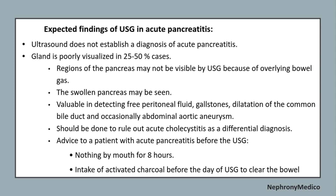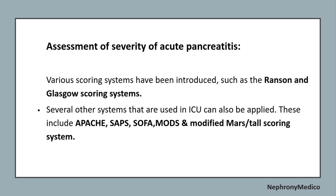Expected findings on ultrasound in acute pancreatitis: ultrasound is valuable in detecting free peritoneal fluid, gallstones, dilatation of the common bile duct, and occasionally abdominal aortic aneurysm. Assessment of severity of acute pancreatitis can be done using the Ranson and Glasgow scoring systems, the APACHE II, SOFA, and modified Marshall scoring systems.